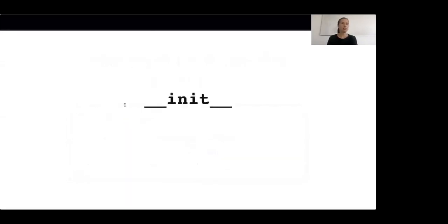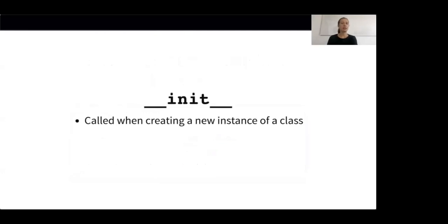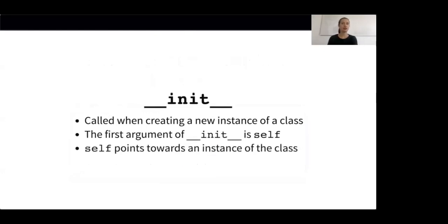The __init__ method is called under the hood when creating a new instance of the class. Its first argument is self, which points towards an instance of the class whenever the method is called.